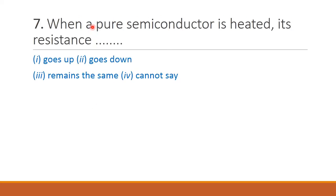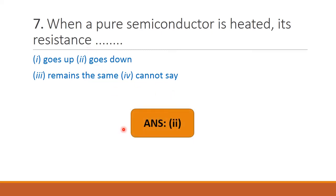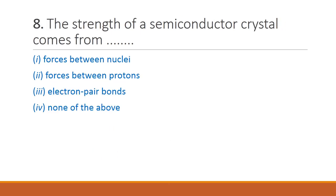Next question: when a pure semiconductor is heated, its resistance — when temperature increases, the resistance decreases because current conduction increases. Therefore option 2 is the right answer. Next question: the strength of a semiconductor crystal comes from — option 1 forces between nuclei, option 2 forces between protons, option 3 electron pair bonds, option 4 none of the above. The strength of semiconductor crystal comes from electron pair bonds, therefore option 3 is the right answer.